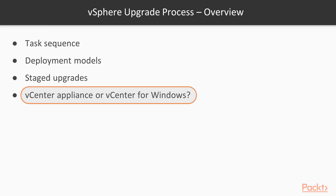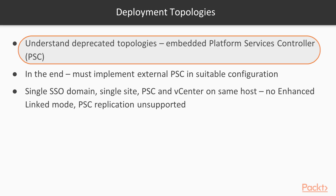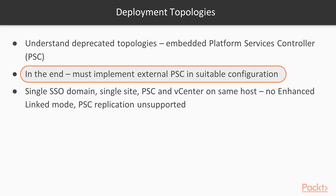You have to make a decision whether you're going to move to the vCenter Server Appliance or stick with vCenter for Windows. A web client is mandatory if you're moving from vSphere 5.5. A key aspect to consider is the deployment topologies. The embedded Platform Services Controller — where the PSC and vCenter Server were all in one bundle — that topology has been deprecated. In your final configuration, you must implement an external PSC in some suitable configuration. There are many options available, and we'll go through three of these to give you an idea of the pros and cons.